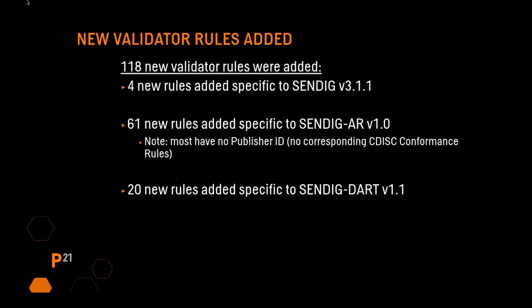These rules are mostly added to check variables, datasets, and even parameters that were introduced in the new version of SendIG Animal Rule. No publisher ID is available for most of them, since there was no CDISC conformance rule and no FDA business rule. Then 20 new rules were added specific to SendIG DART version 1.1.